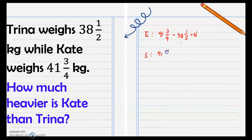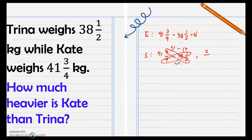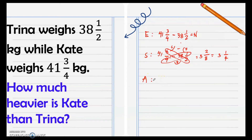The fractions are dissimilar, so we use the butterfly method by cross-multiplying. Two times three is six, four times one is four, then we subtract the new numerators: six minus four is two. Multiply the denominators: four times two is eight. Subtract the whole numbers: 41 minus 38 is three. We simplify two over eight to one-fourth. The answer: Kate is heavier by three and one-fourth kilograms than Trina.